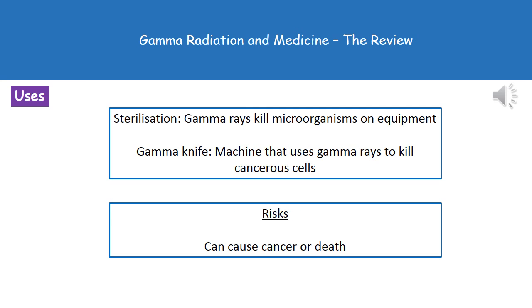In terms of the uses of our gamma radiation, we can use it first of all to sterilize equipment, because the gamma rays will kill microorganisms present on the equipment. Secondly, we can use it in a machine called a gamma knife, which uses gamma rays in order to kill cancerous cells — basically a form of cancer treatment.